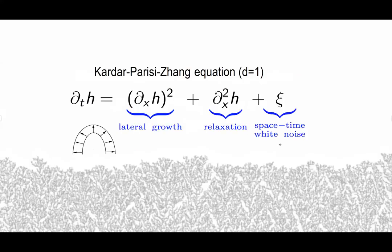Kardar, Parisi, and Zhang introduced their KPZ equation as a model for ballistic aggregation and identified the three basic things driving the growth. There's a driving space-time white noise — just a random kick independently at every space-time point. There's a Laplacian term which relaxes the interface and tries to keep it from getting too wild. One term is trying to make the interface rough and one is trying to smooth it out — they actually balance each other and produce something which looks locally like a Brownian motion.